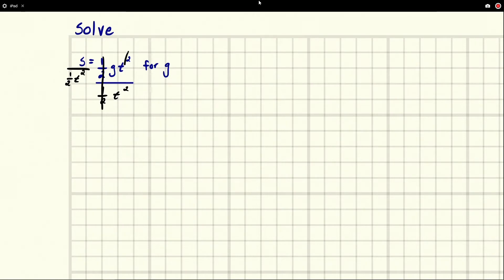These simplify out to one, so it's like one times g, and that's just g. Then on the other side we have s over one half t squared.